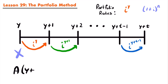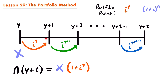The accumulation at time Y plus T equals the investment X times the accumulation factor for the first portfolio rate for one year: (1 + i^Y). Then to accumulate another period from Y plus one to Y plus two, we multiply by (1 + i^(Y+1)). We continue multiplying by accumulation factors for each portfolio rate until we reach the last period — from year Y plus T minus one to year Y plus T — using the portfolio rate for year Y plus T minus one.